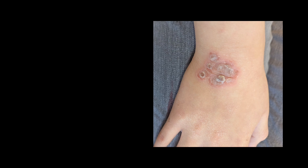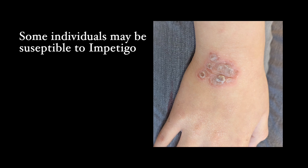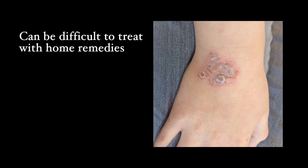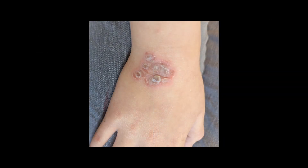Some people are more susceptible to impetigo — in a household full of children, one might evade the infection while everyone else has it. Symptoms start gradually, usually with itching and water-containing blisters that combine and thicken up. It can be very stubborn and doesn't tend to respond to antibiotic creams or Vaseline, which is what usually brings parents and the child to the doctor.